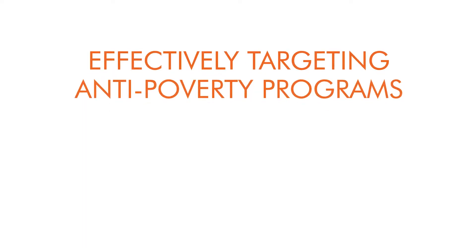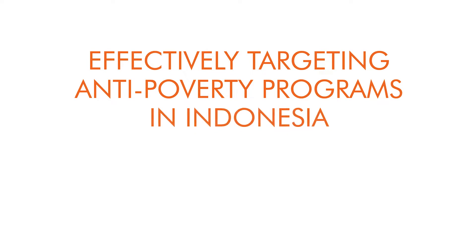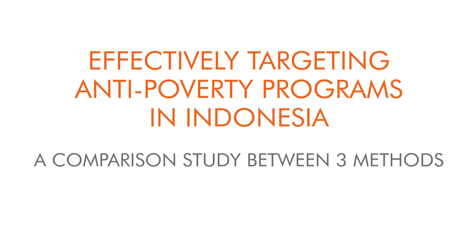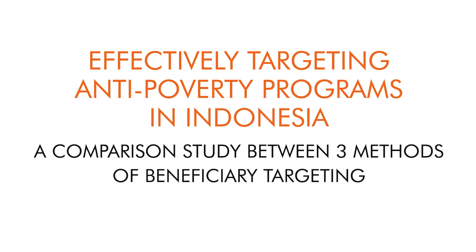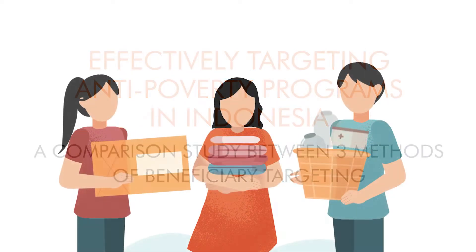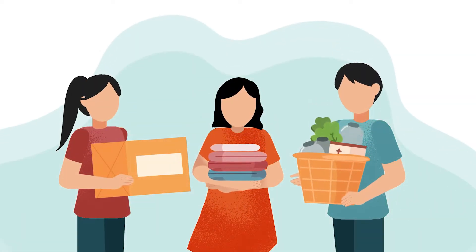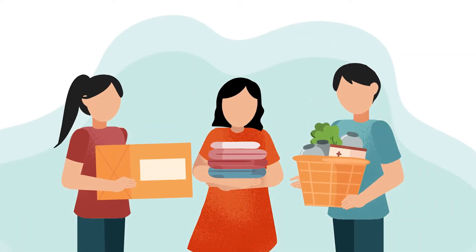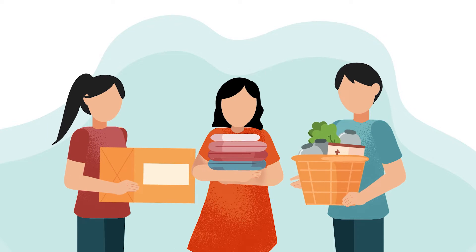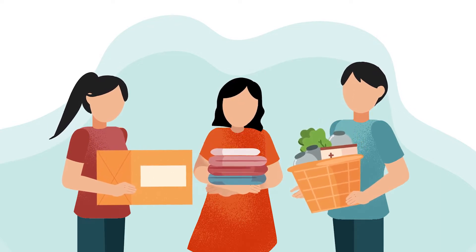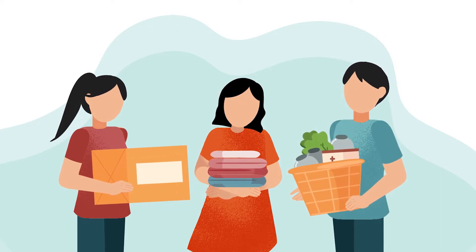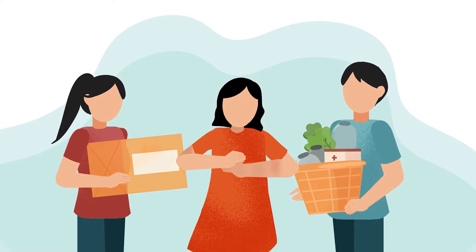Effectively targeting anti-poverty programs in Indonesia: a comparison study between three methods of beneficiary targeting. Social assistance programs such as cash transfers and food assistance are an important part of poverty alleviation.